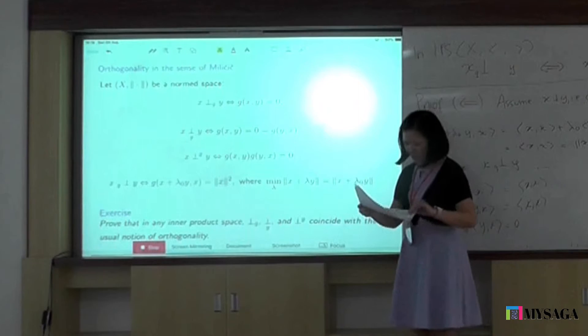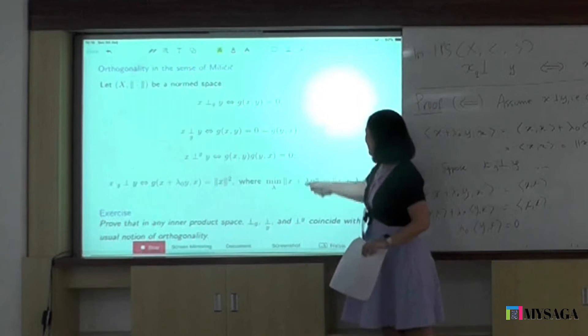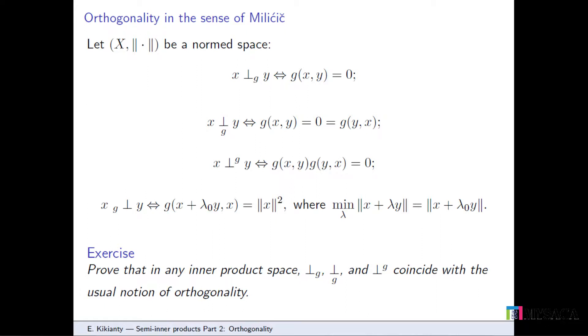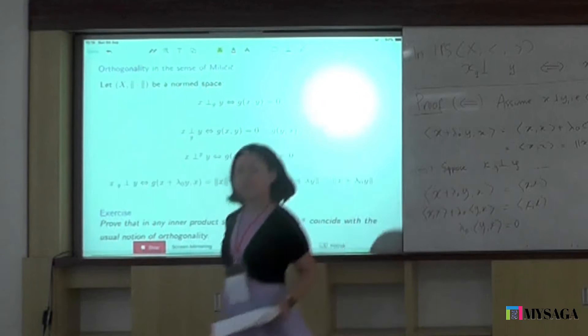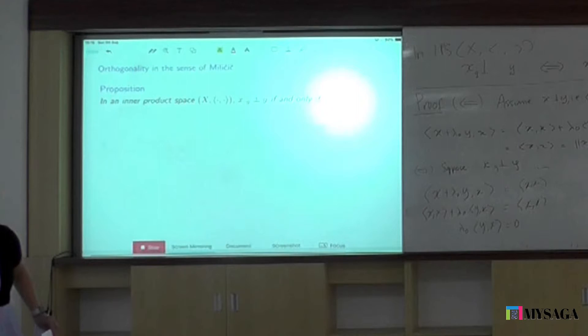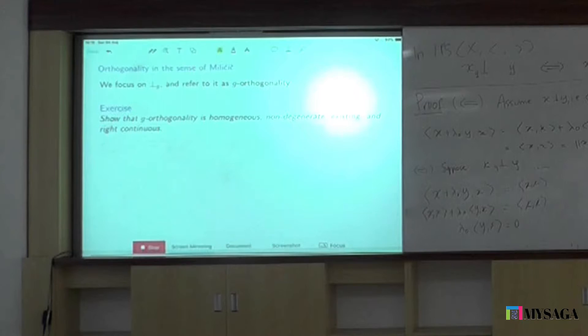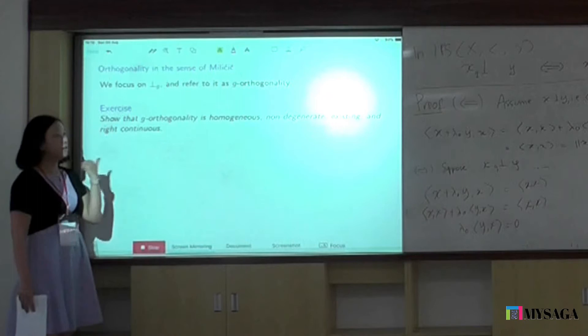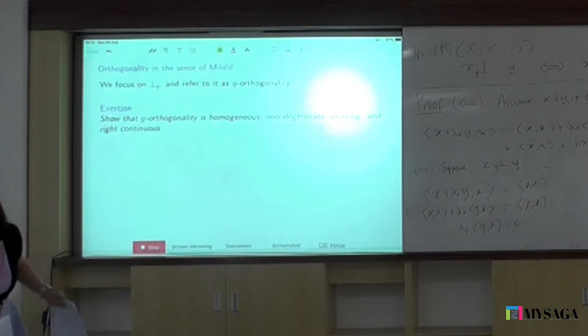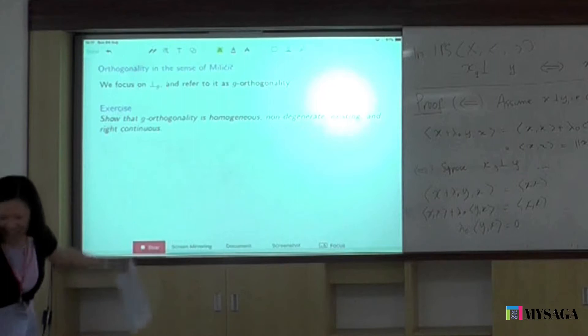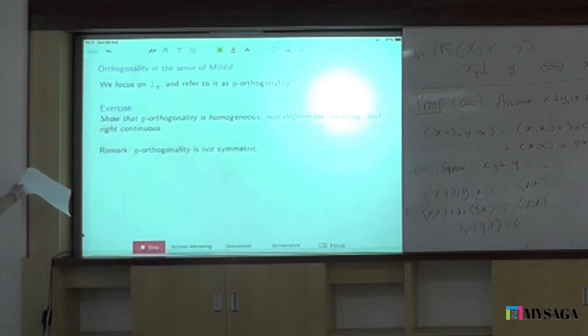So Milicic introduced four definitions, but as he continues with his work, these last three are quite cumbersome to work with — lots of requirements. So he tends to focus on the first one, and we're going to do the same. G-orthogonality: x is orthogonal to y if G(x, y) equals zero. Exercise: show that G-orthogonality is homogeneous, non-degenerate, existing, and right continuous. G-orthogonality is obviously not symmetric from its definition.